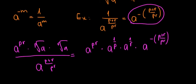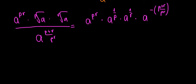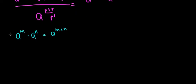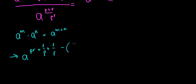Now we have a multiplication with the same base. The rule is: a to the power m times a to the power n equals a to the power m plus n. So we add all the exponents, giving us a to the power: pr plus 1 over p plus 1 over r minus p plus r over pr.